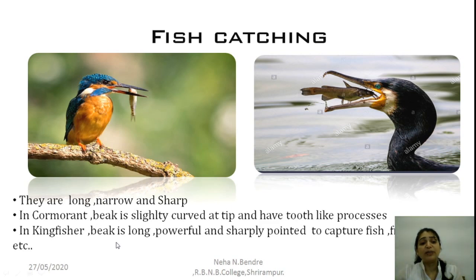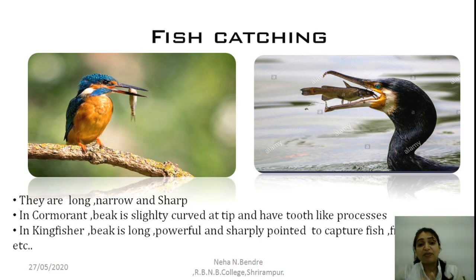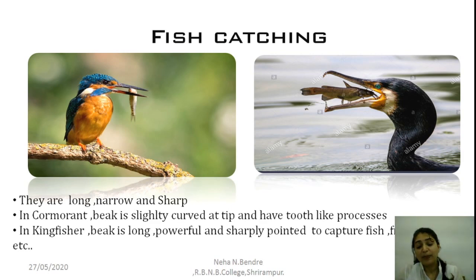In the kingfisher, the beak is also long, powerful, and sharply pointed to capture fish, frogs, and mollusks. These birds have very sharp vision — they sit on the upper bark of a tree, watch the water bodies, and immediately take a big dive into the water to catch their prey.